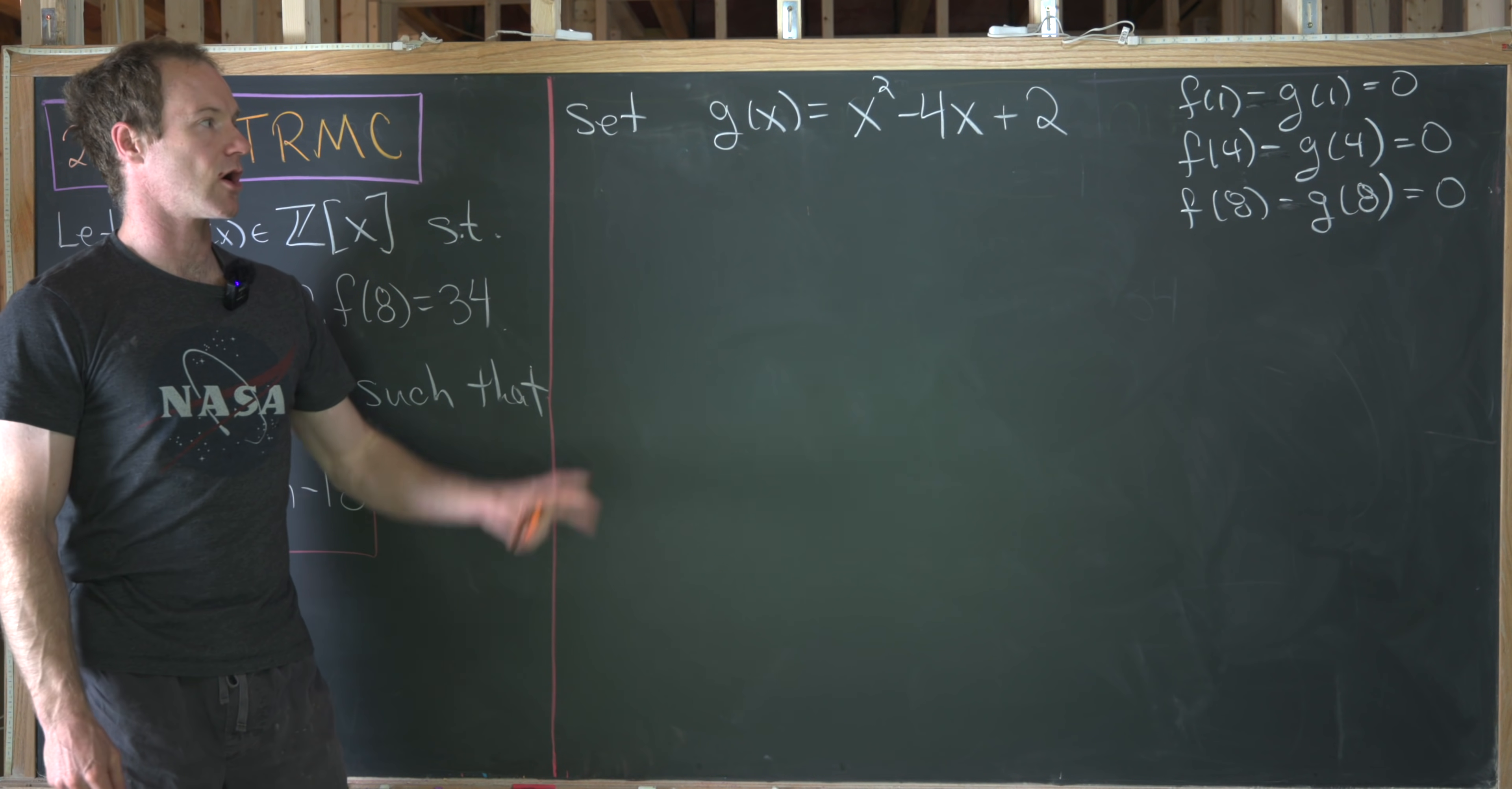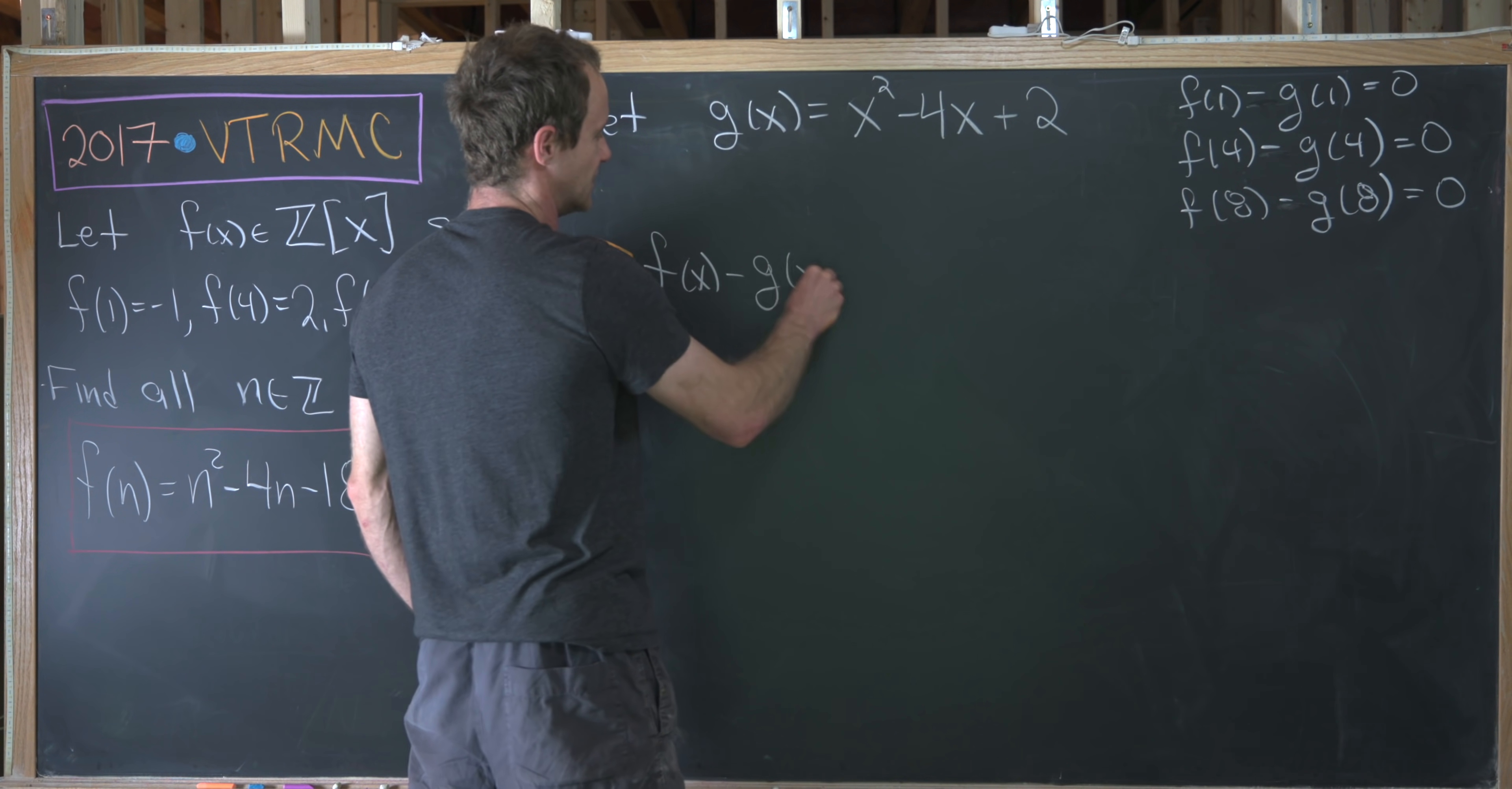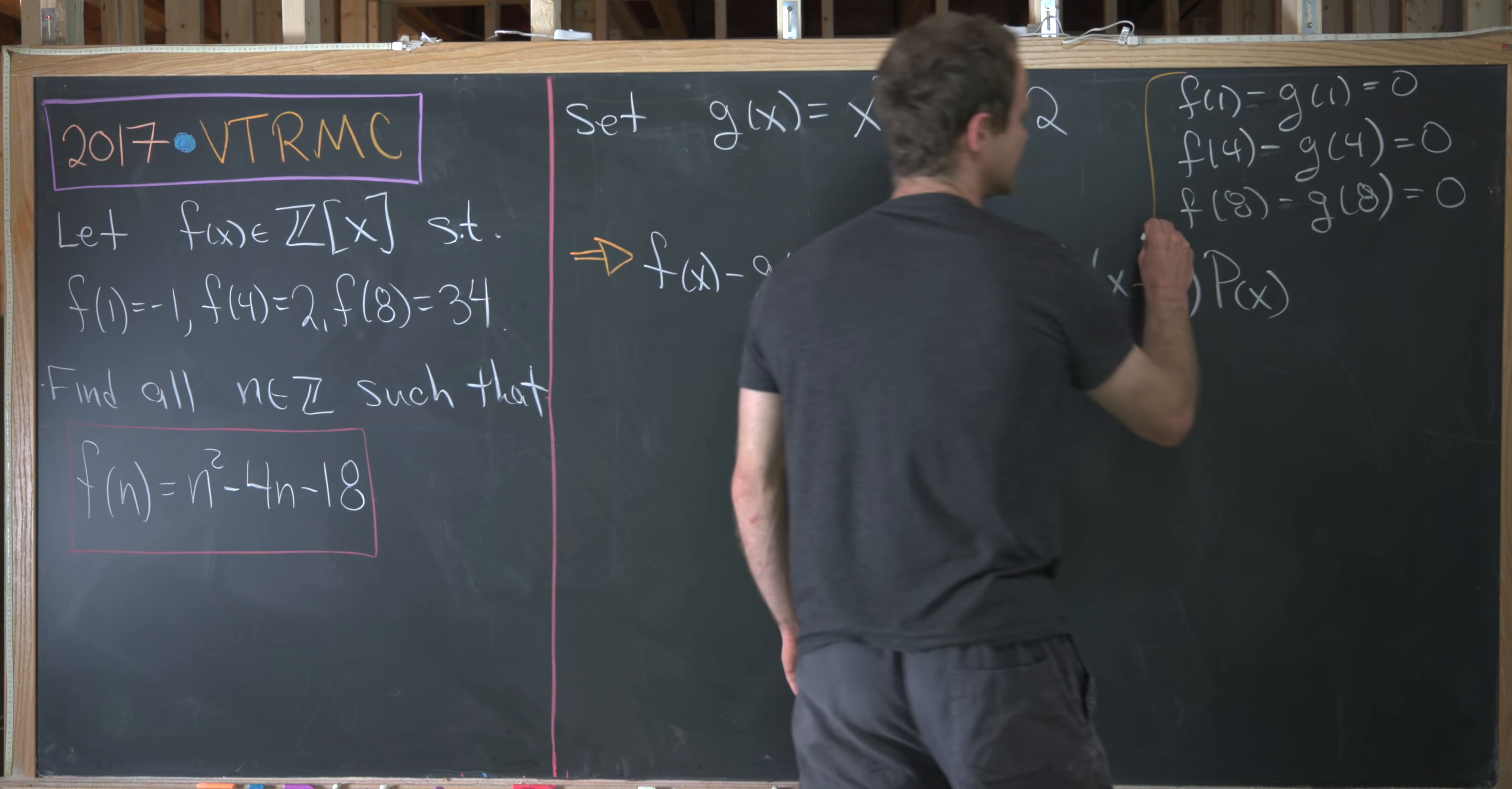In other words, 1, 4, and 8 are roots of the polynomial f of x minus g of x. But if they're roots of that polynomial, that means we can factor the corresponding linear term out of that polynomial. In other words, we have f of x minus g of x is equal to (x minus 1) times (x minus 4) times (x minus 8) times a new polynomial, which I'll call p of x. So again, that follows from our construction of g along with these three equations right here.